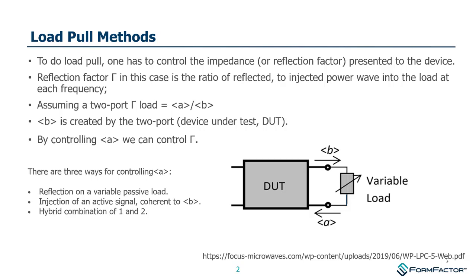This is done by effectively varying the signal reflected from the load — the signal A — that the device will see. This reflected signal will be varied in a number of ways: either by looking into a variable passive load such as a load pull tuner, or by injection of a signal which is coherent to B, or some combination of both the passive and active cases. Essentially what we're doing is varying the reflection factor that the device will see, which is the reflected signal A divided by the output signal B. B is created by the device itself, and A is created by the variable load or by the active signal.